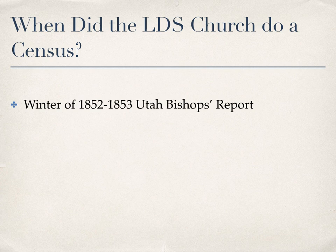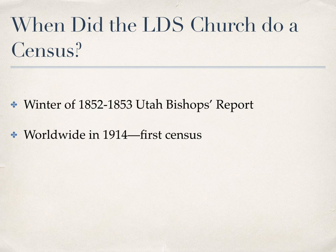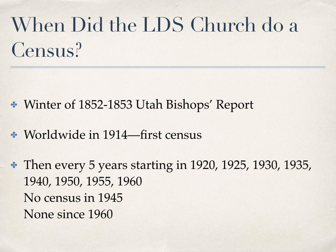When did they do a census? The first reference is in the winter of 1852 when we had the Utah Bishops' Report, but actually the very first worldwide census was taken in 1914. Then, starting in 1920, a census was taken every five years up until through 1960, with the exception of 1945 during World War II when no census was taken.